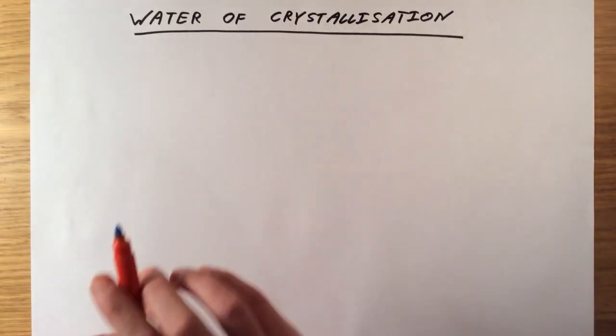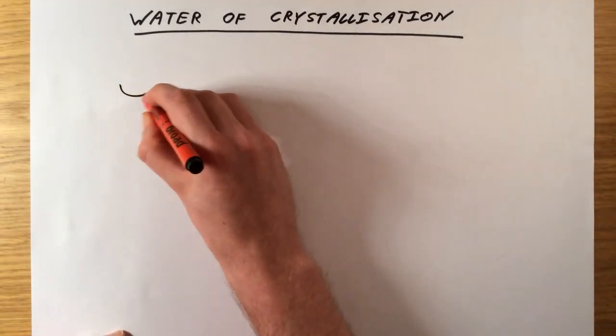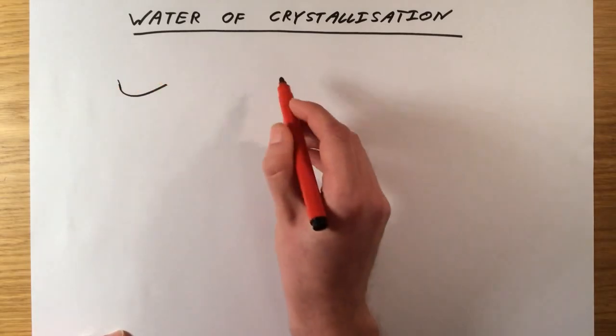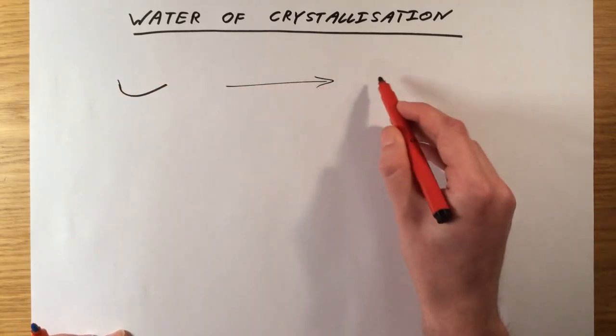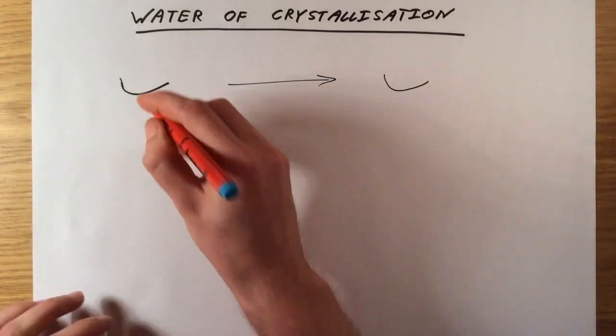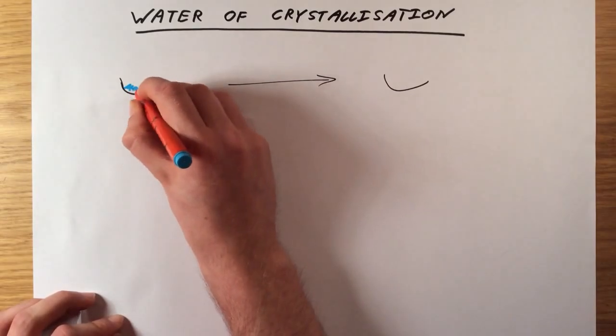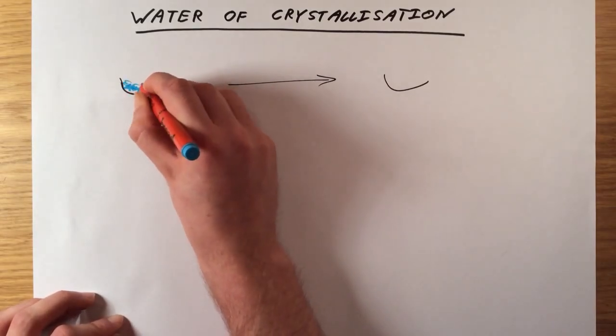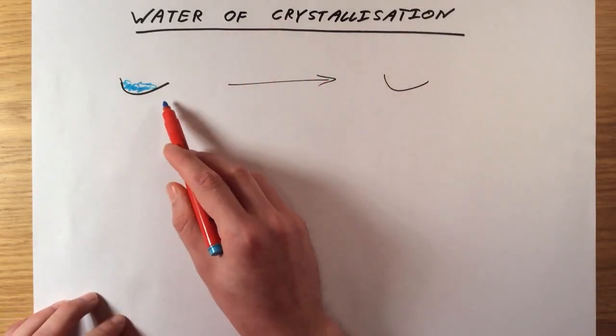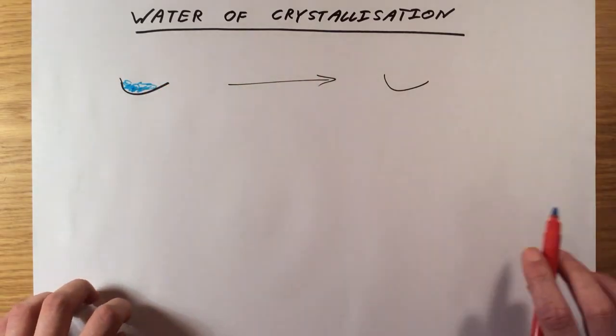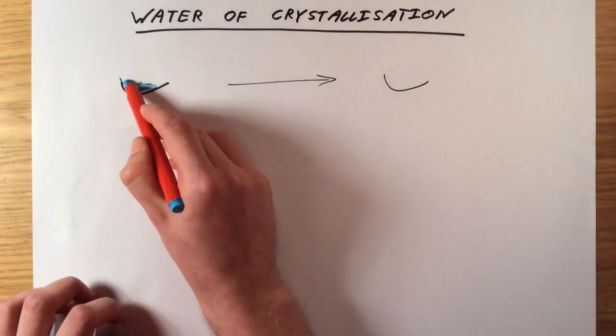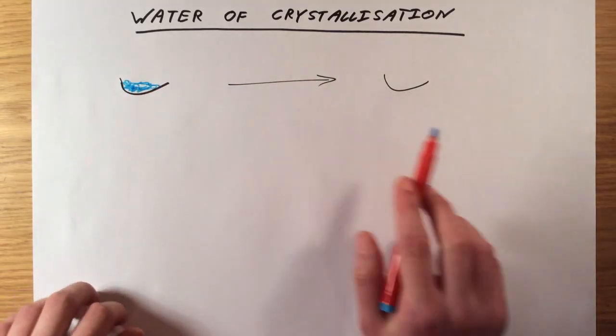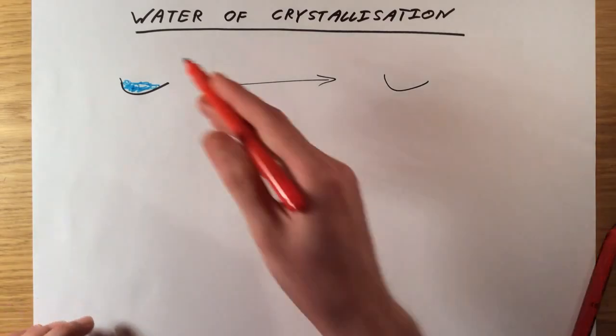So for example, if you have copper sulfate, normally when you make it, if you let it evaporate nice and slowly, you get really nice blue crystals, really nice colored crystals. And that is actually hydrated copper sulfate. It's perfectly stable at that. The crystal itself is very stable. The water is going nowhere unless you actively force it out.